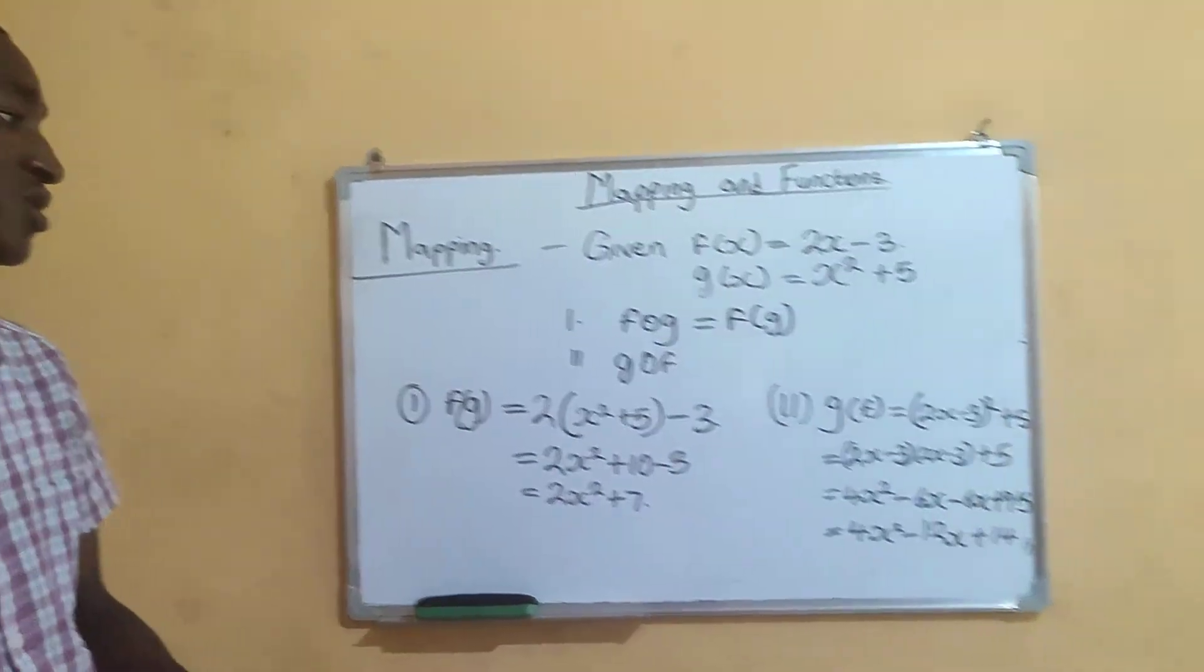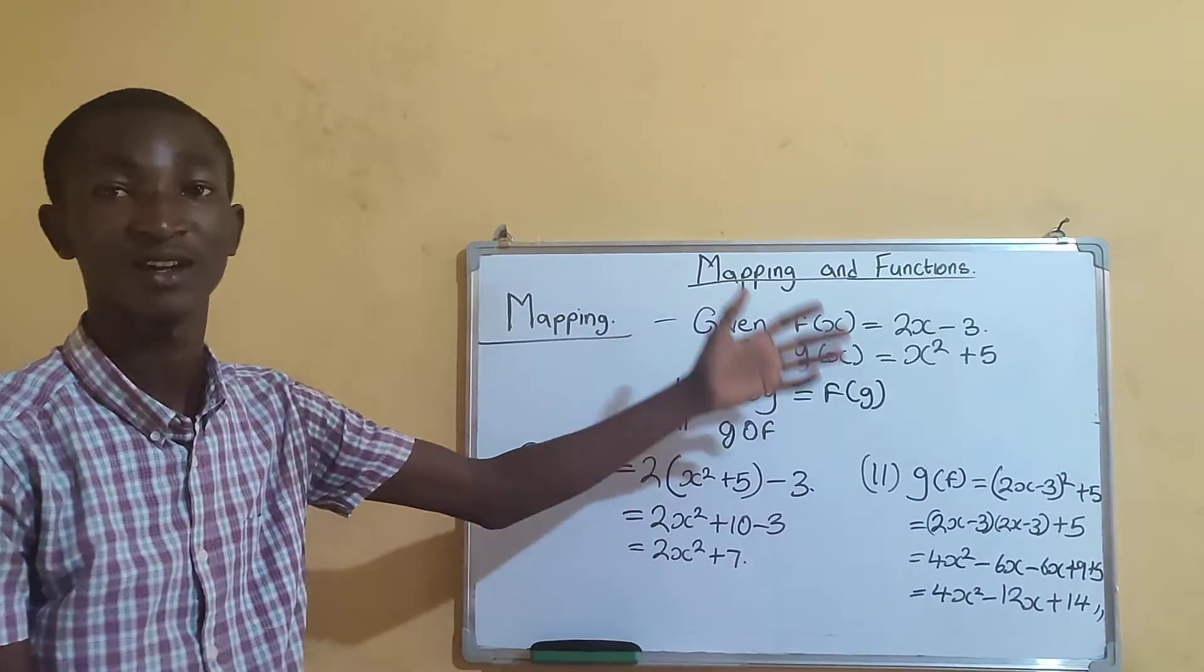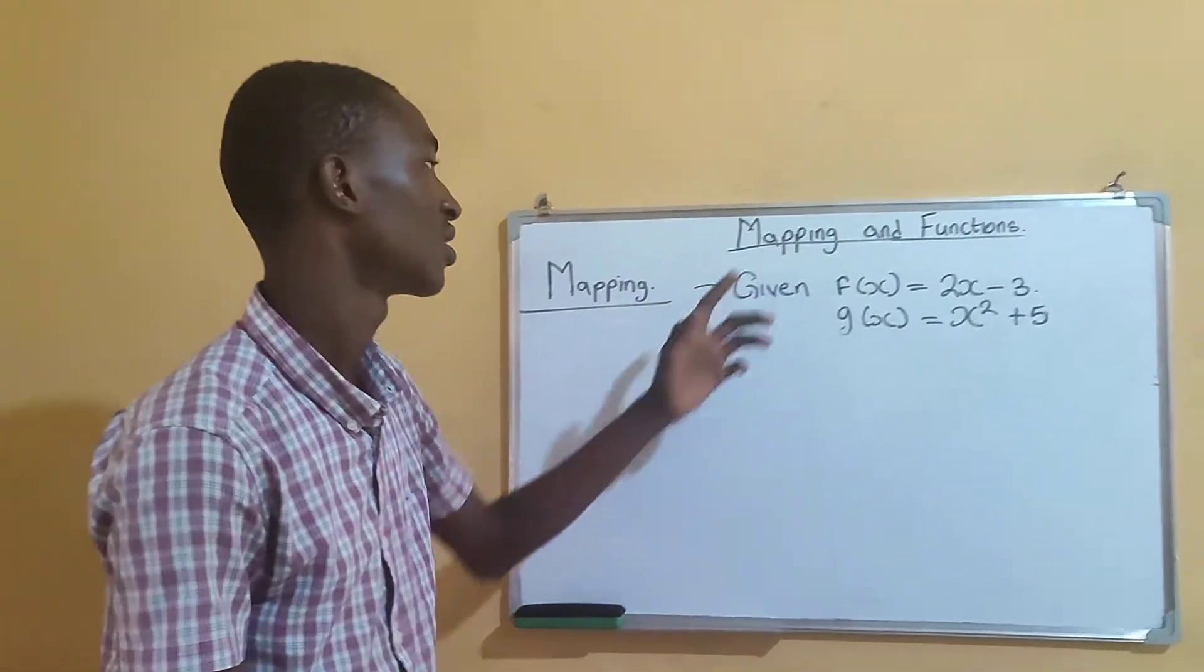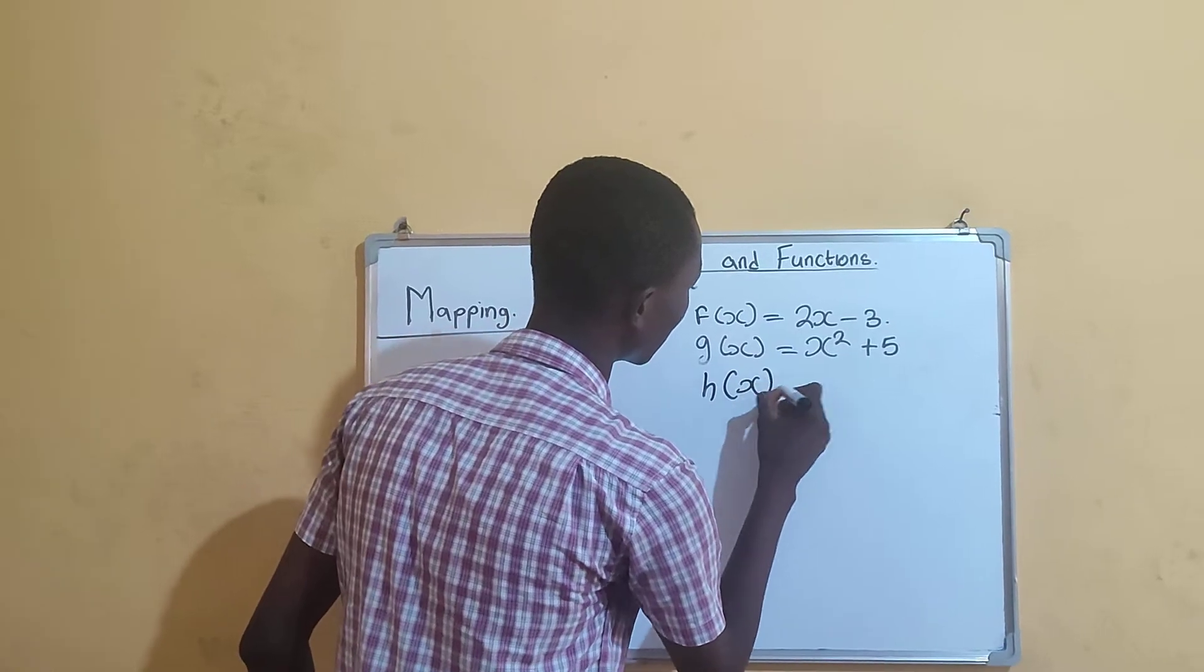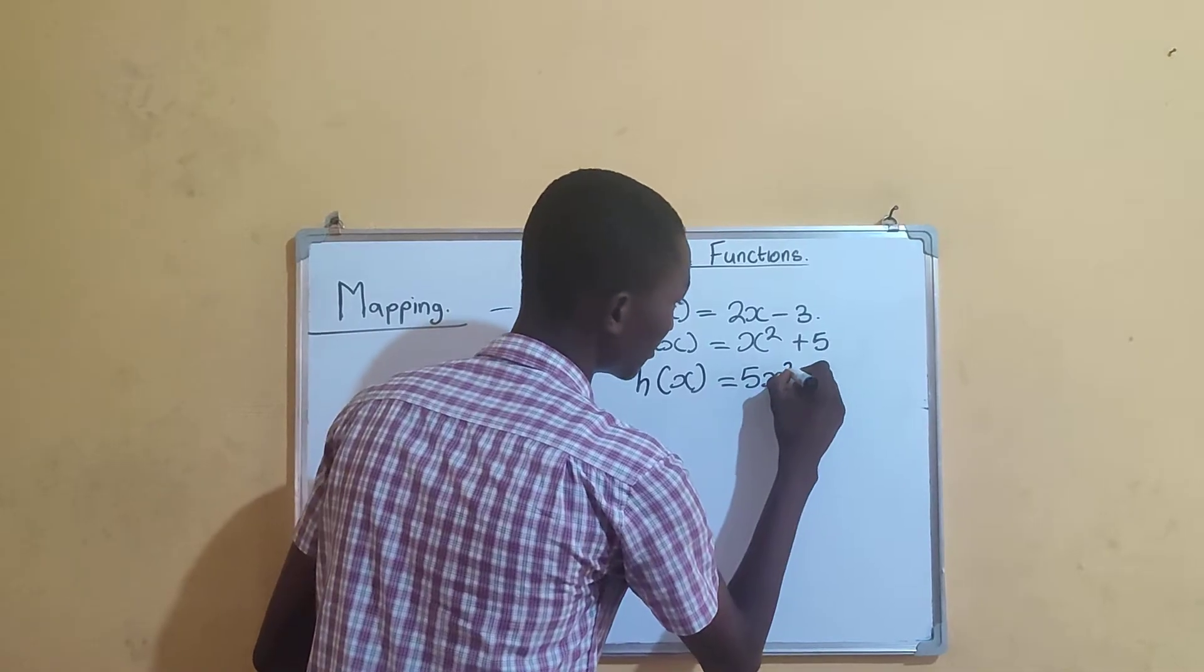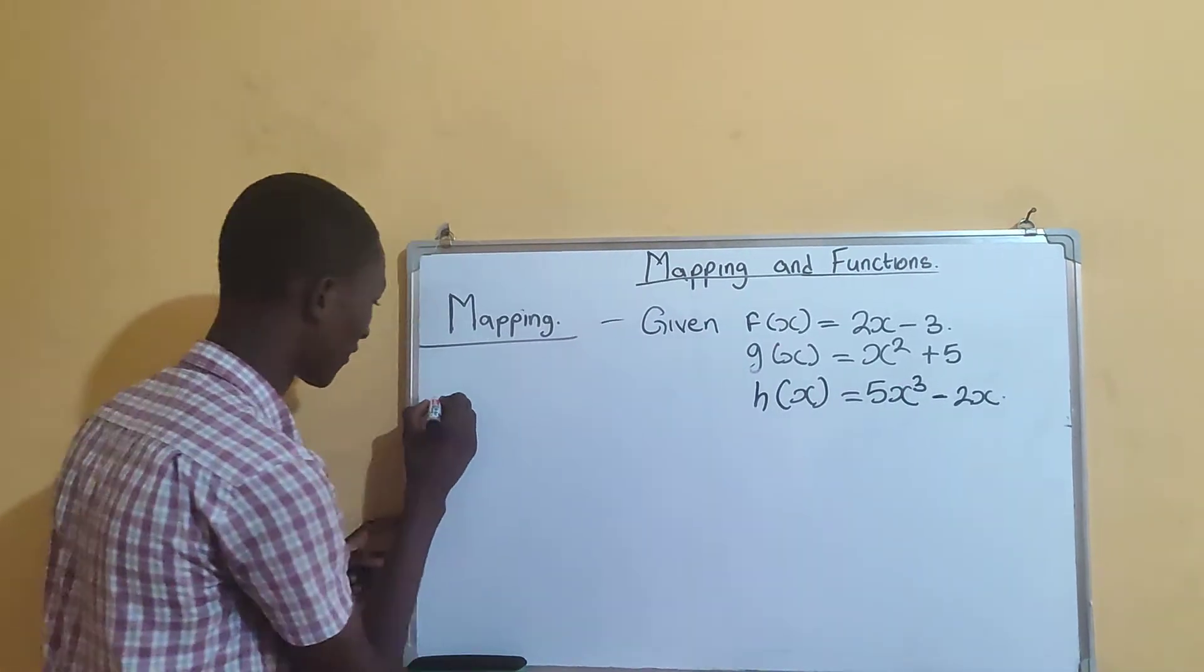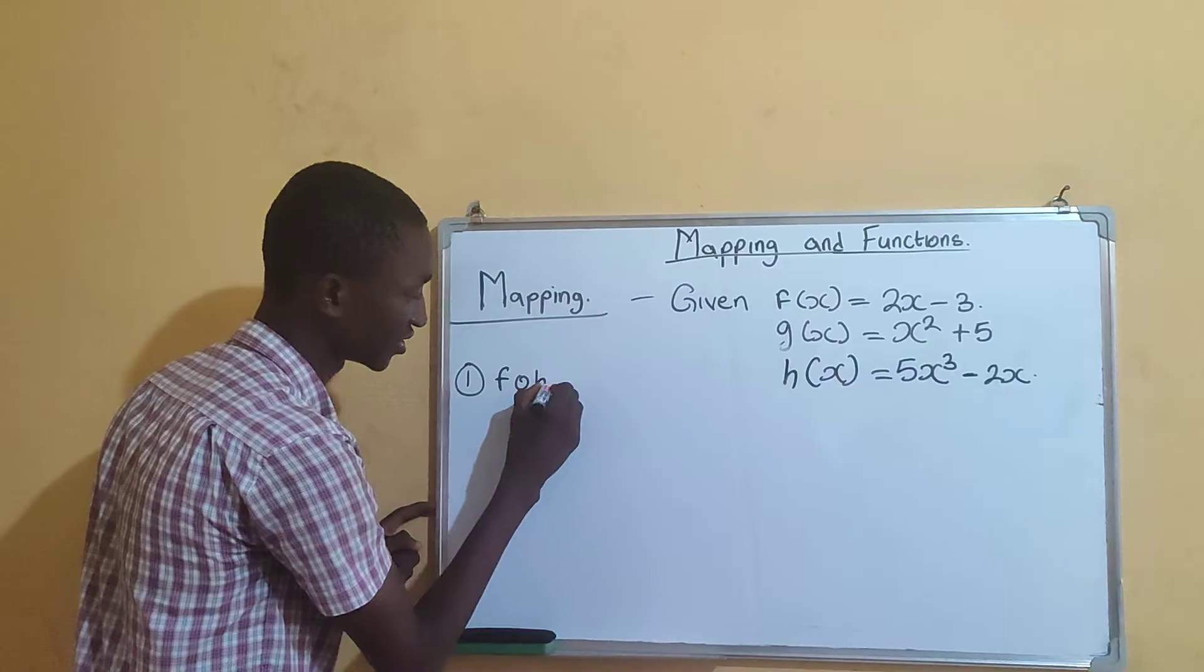After solving the example of two functions, we add another function to this: h(x), let's take 5x cubed minus 2x. That's another function. The first question asks us to find f o h o g.